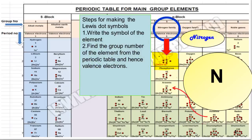You can take help of the electronic configuration also. You can see that in the electronic configuration of nitrogen, there are a total of 5 valence electrons.